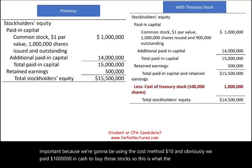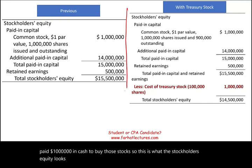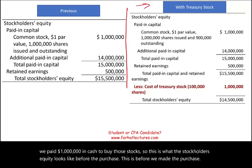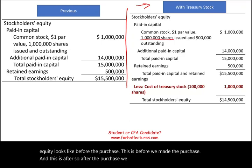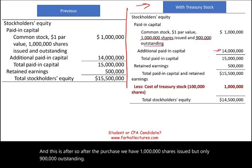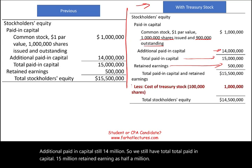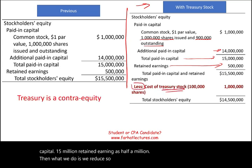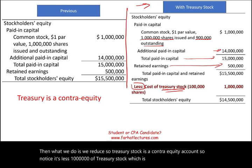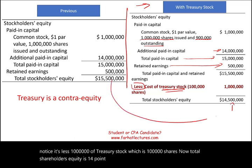After the purchase, we have one million shares issued but only 900,000 outstanding. Additional paid-in capital is still $14 million, total paid-in capital is $15 million, retained earnings is $500,000. Treasury stock is a contra equity account, so we subtract $1 million. Total shareholders' equity is now $14.5 million — it used to be $15.5 million, so equity went down by $1 million.